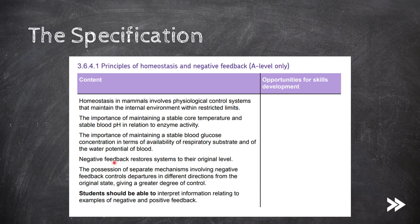We also need to know about negative feedback and how it restores systems to their original level. And finally, we need to know that the possession of separate mechanisms involving negative feedback controls departures in different directions from the original state, giving a greater degree of control. Note that the specification wants students to be able to interpret information relating to examples of not only negative, but also positive feedback, so I think it would be useful to give you a small overview of what positive feedback is and provide you with a few examples.